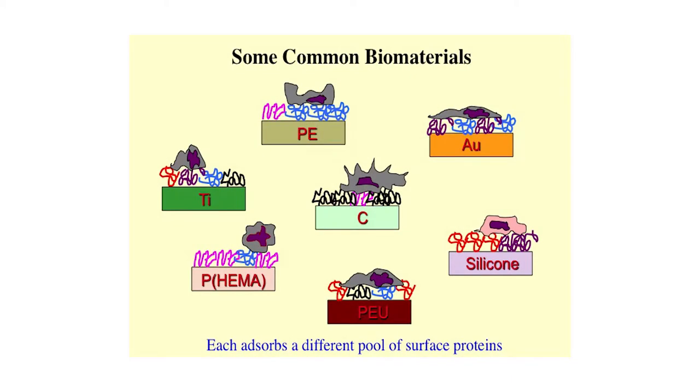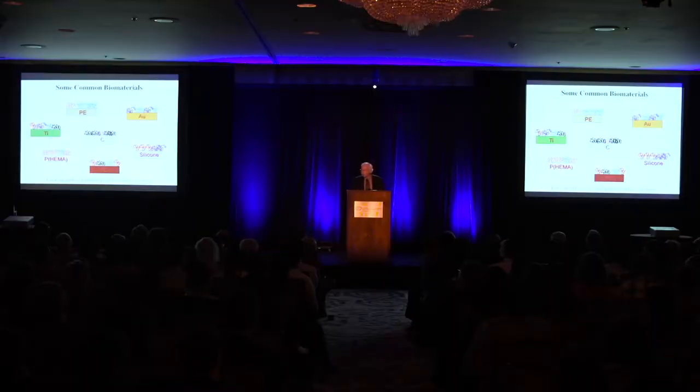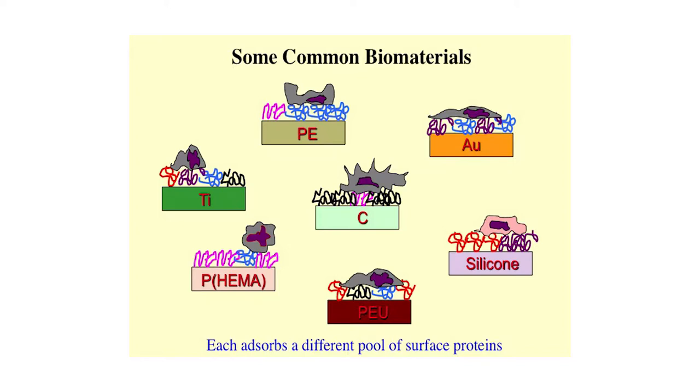We have seven different biomaterials — metals and polymers, hydrophobic and hydrophilic — all widely used in medical devices today. If we place these into blood, they all absorb proteins, but the mix of proteins on the surface of each one is considerably different. When living cells come down and interact, they see those proteins and respond differently: sometimes cells spread, sometimes they round up, sometimes they become activated.